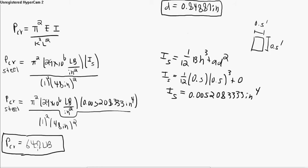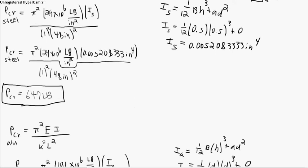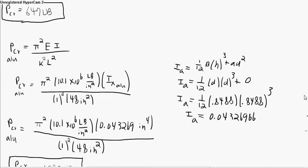So if this were to exceed, if the centric force were to exceed 647 pounds, the column would buckle.